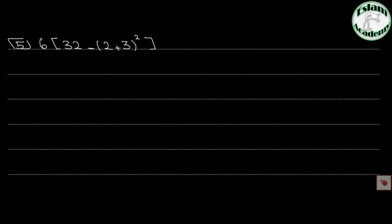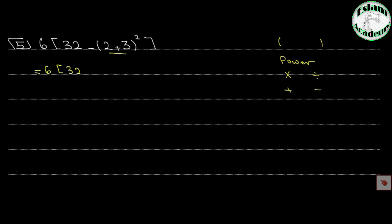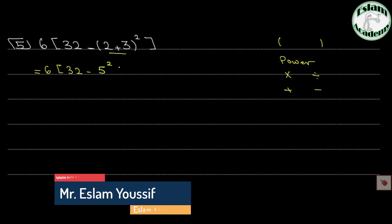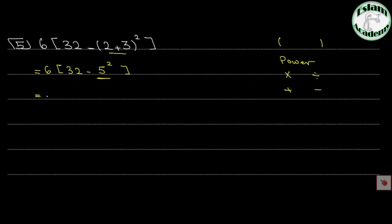Number 5: 6 times (32 minus 2 plus 3) to the power 2. We follow brackets, power, times or divide, plus or minus. Inside the bracket we have an inner operation: 2 plus 3 equals 5. So it becomes 6 times (32 minus 5 to the power 2). Solve the power: 5 squared is 25. That gives 6 times (32 minus 25), which is 6 times 7, equals 42.